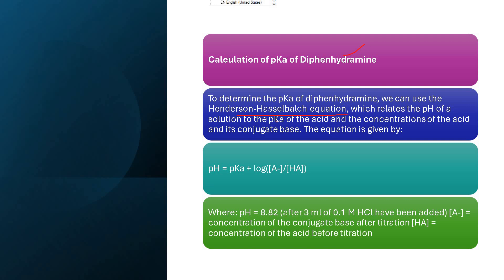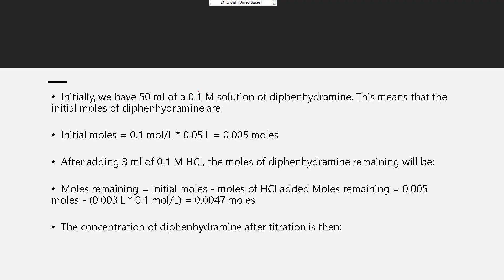The Henderson-Hasselbalch equation relates the pH of the solution to the pKa of the acid and the concentrations of the acid and its conjugate base. The pH is 8.82 after 3 ml of 0.1 molarity HCl have been added. Initially, we have 50 ml of 0.1 molar solution of diphenhydramine, so the initial moles of diphenhydramine equal 0.1 mol/L times 0.05 liters, giving 0.005 moles.